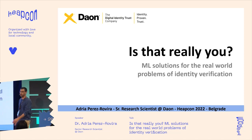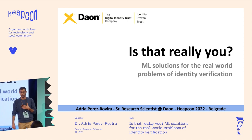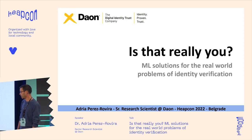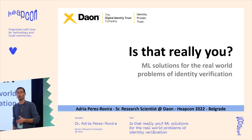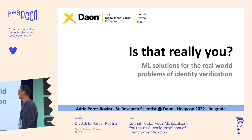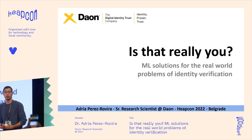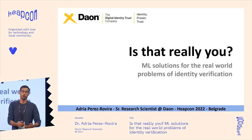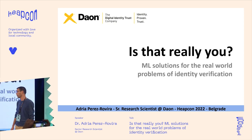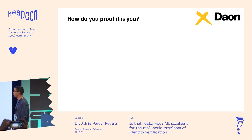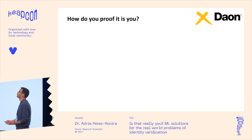Thank you very much. I'm Adria Perez Rovira, a research scientist at Down, and today I'm going to talk about how we use machine learning solutions for verification purposes — to prove that you are who you claim to be when you go online shopping or access your bank account.